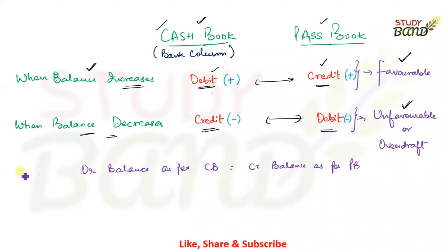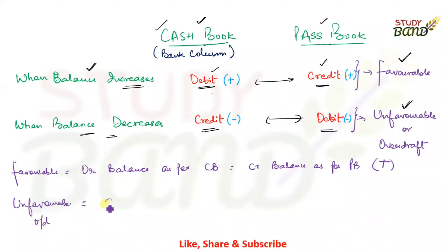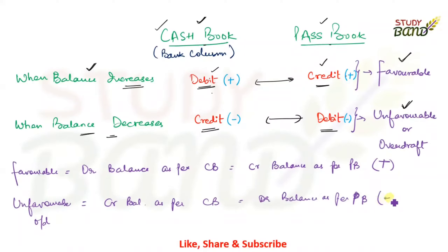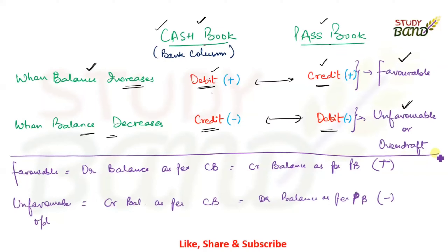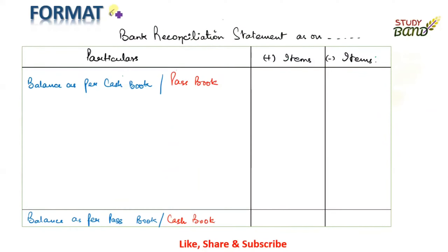To summarize: favorable balance is always positive — debit balance as per cash book equals credit balance as per pass book. Unfavorable or overdraft balance is negative — credit balance as per cash book equals debit balance as per pass book. Now let's look at the format of the Bank Reconciliation Statement. We write 'Bank Reconciliation Statement as on [date]'. There is no fixed time to prepare BRS — you can prepare it whenever needed.